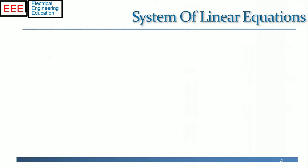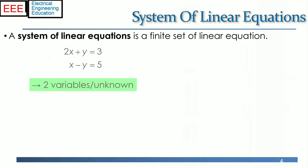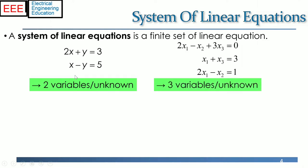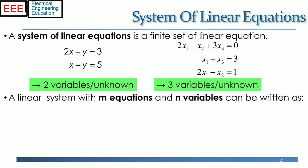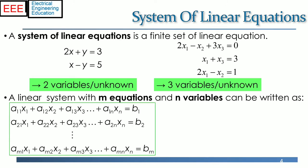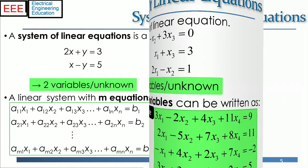A system of linear equations is a finite set of linear equations. Examples include a set of linear equations involving two variables or unknowns, and three variables or three unknowns as shown. Generally, a linear system with m equations and n variables can be written as shown on the bottom left. An example of four equations with four unknowns is shown on the right.